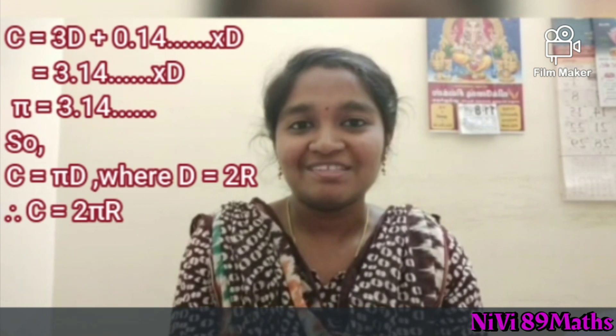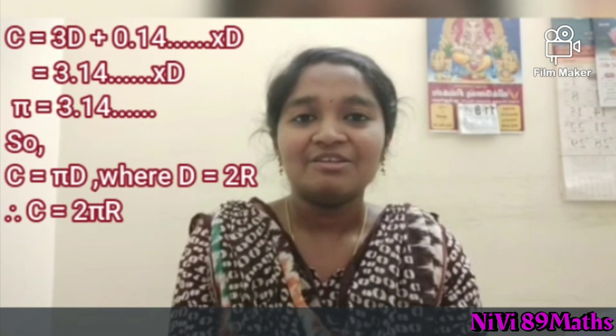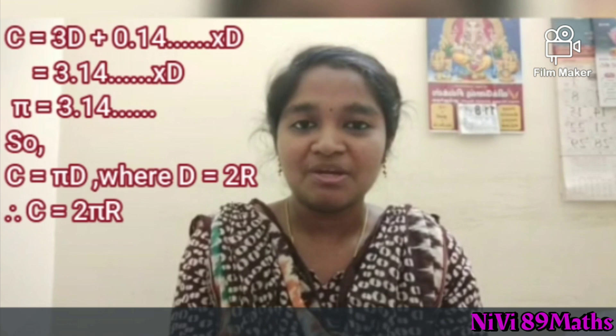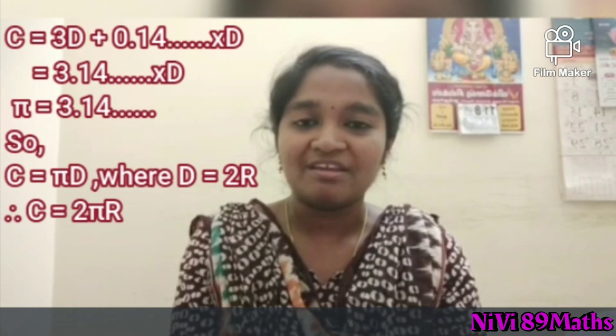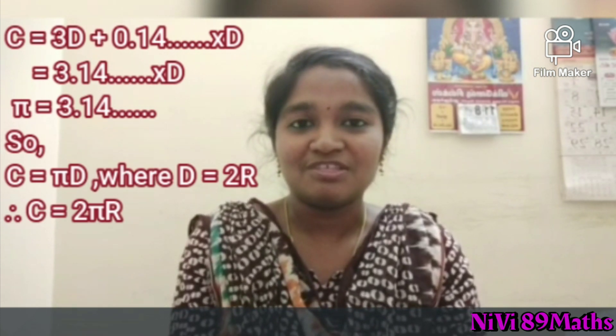If we use πD, we use 2R. So if we substitute 2R, we get 2πR. This is the circumference of the circle.